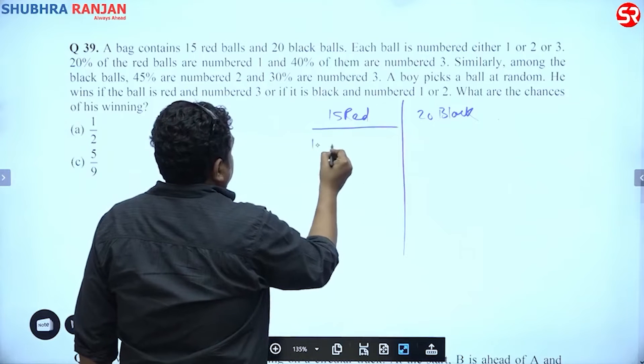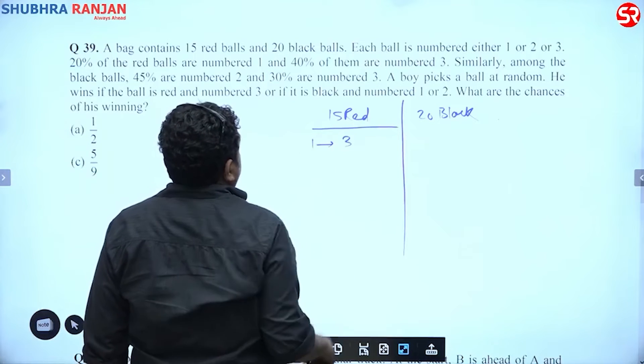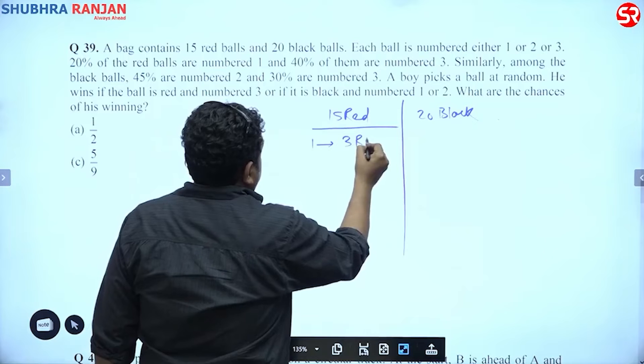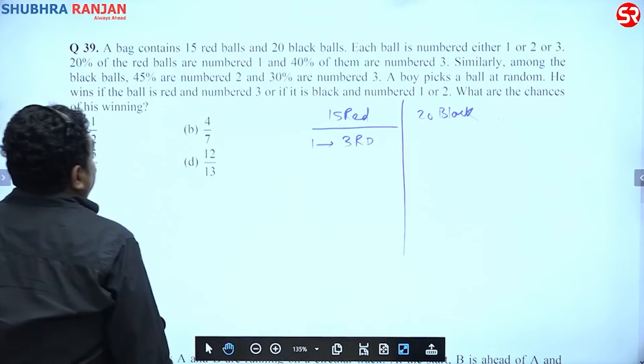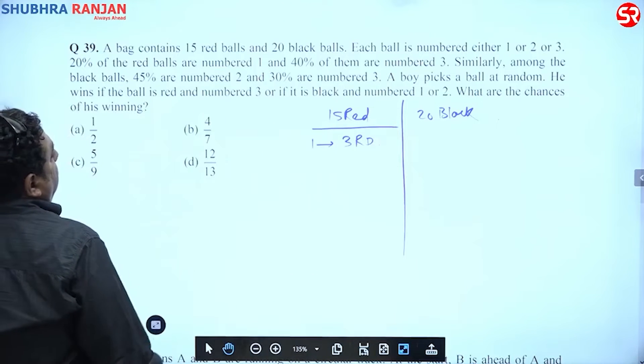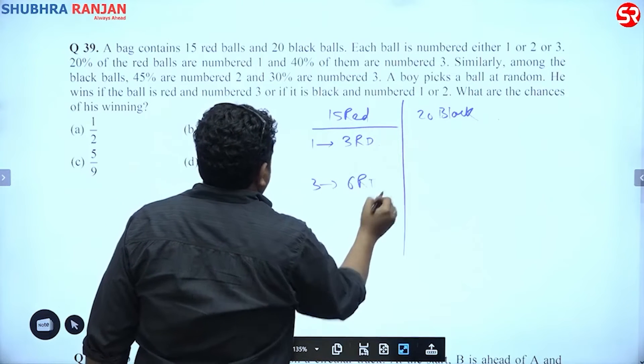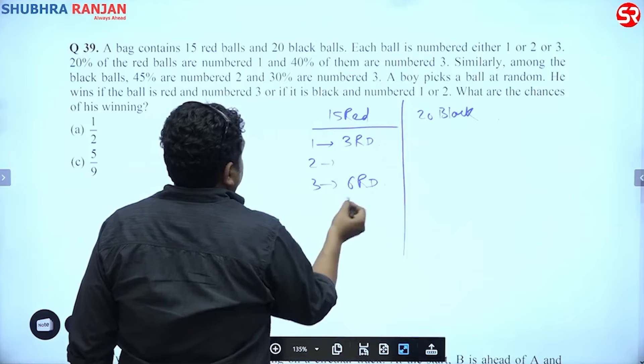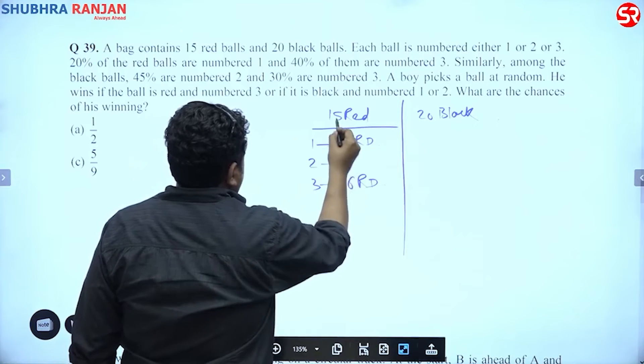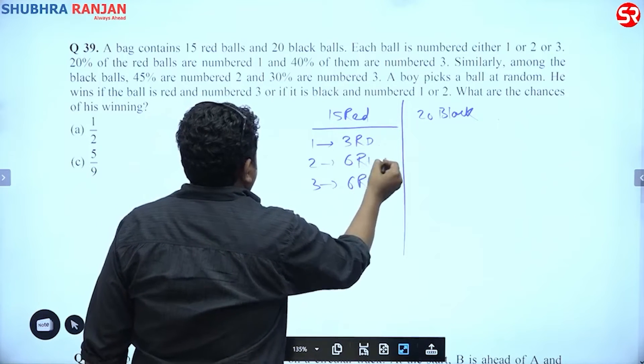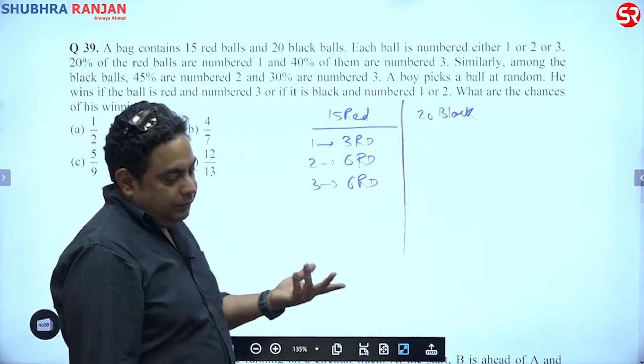So red ball number 1 is 20%, which is 3 balls. 3 red balls are number 1, right? And 40% are number 3. So number 3 is 40%, which is 6 red balls are number 3. So number 2 would definitely be 6 red balls again, so total is 15.